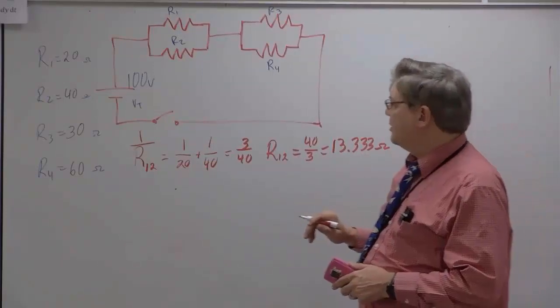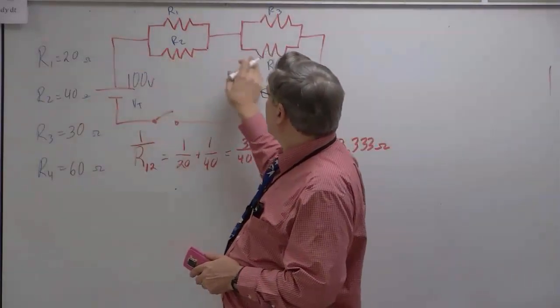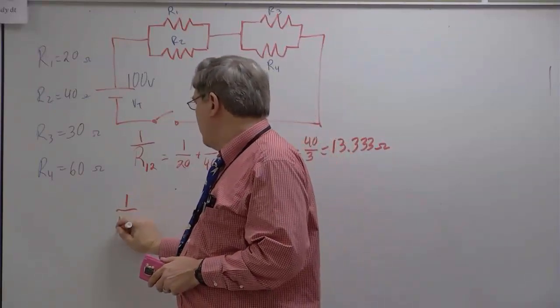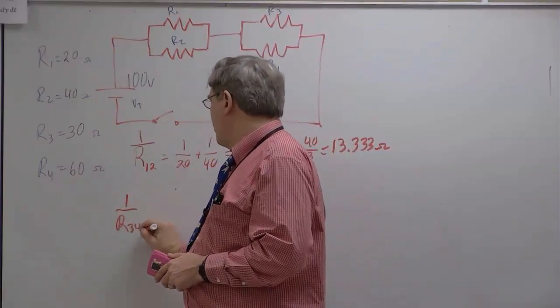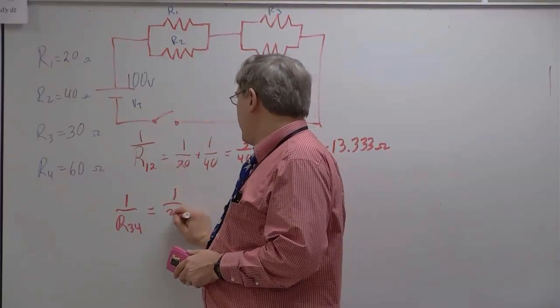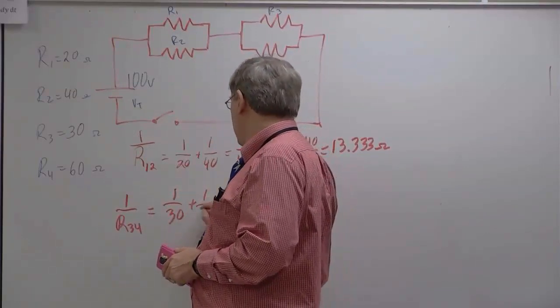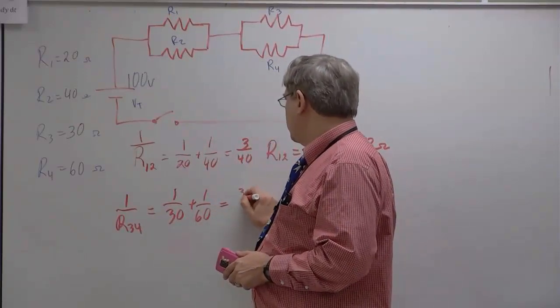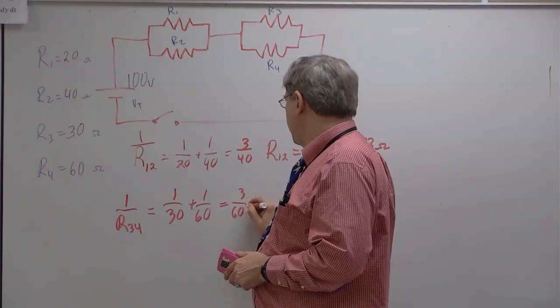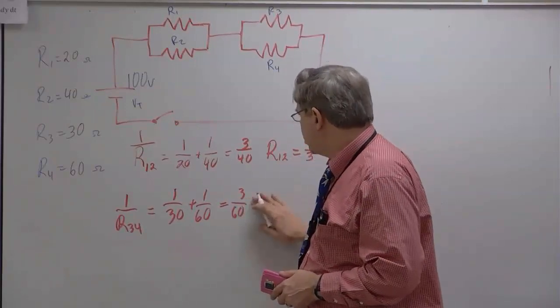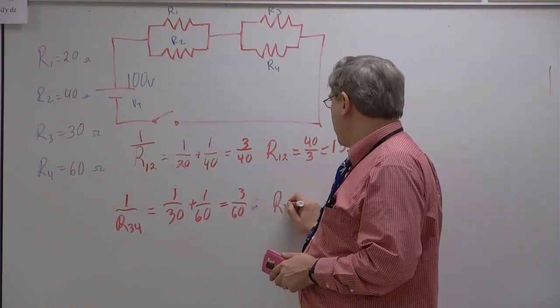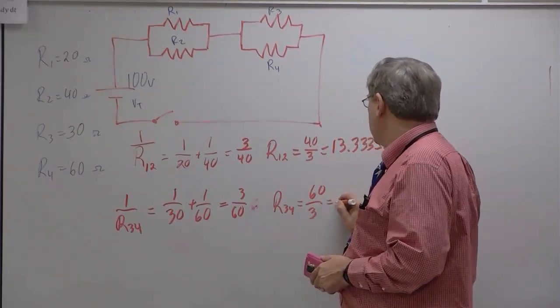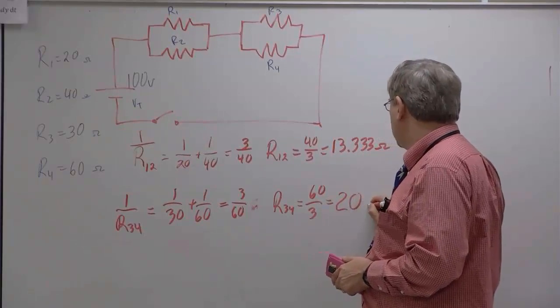I'm going to round at the end. So my next parallel circuit here is R3, R4. So 1 over R3,4 is going to be equal to 1 over 30 plus 1 over 60, which is going to be equal to, that'll be equal to 3 over 60, which is, then I can say R3,4 is equal to 60 over 3, which is equal to 20 ohms.